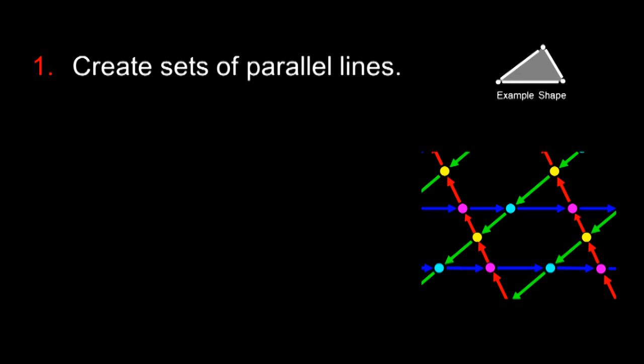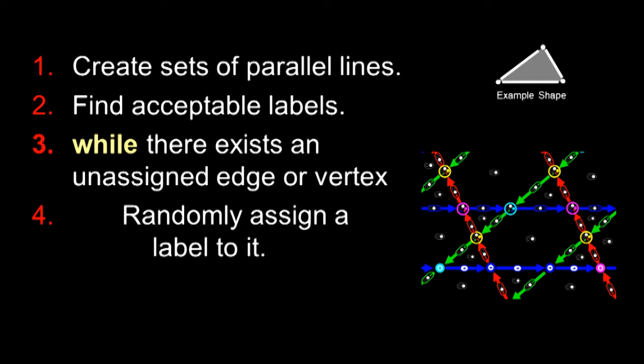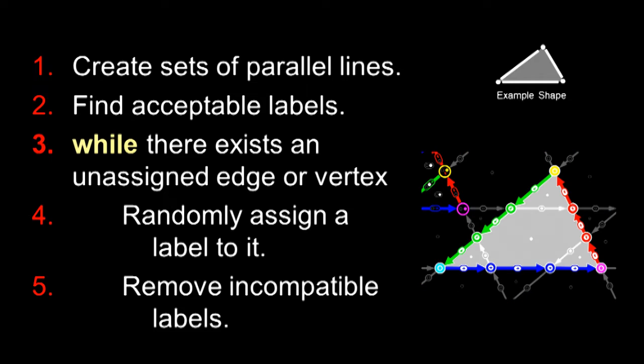Okay, now let's summarize the algorithm. First, we create a set of parallel lines. Then we add all possible labels to the vertices and edges. Then we follow the normal model synthesis approach. For any unassigned edge or vertex, we randomly assign a label to it and propagate this using AC4.